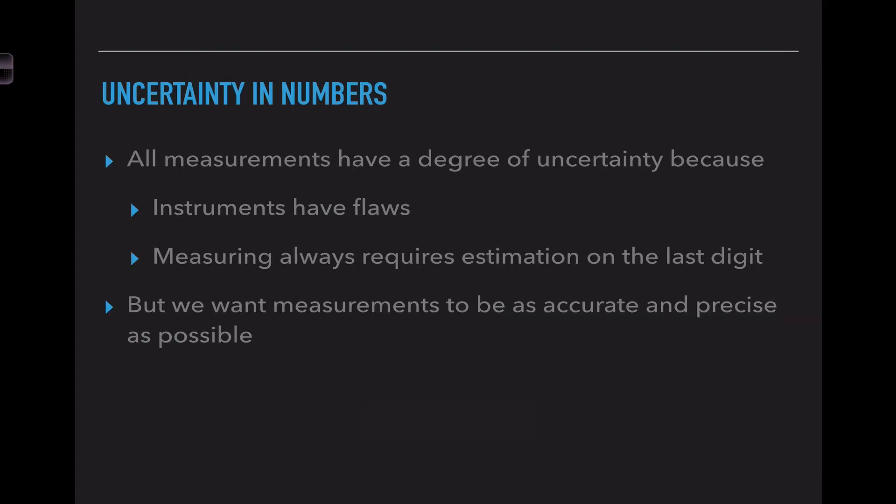So the first thing we're going to talk about is uncertainty in numbers. When we talk about sig figs, we automatically know that numbers in science class have some degree of uncertainty. That's because instruments have flaws and measuring always requires some sort of estimation. Depending upon the instrument you're using, you may be able to get very precise measurements, but you may not have a very good measure of accuracy. But we want measurements to be as accurate and as precise as possible.